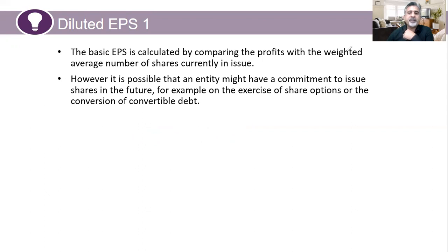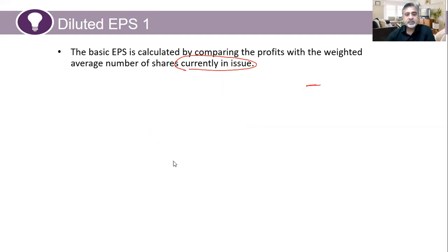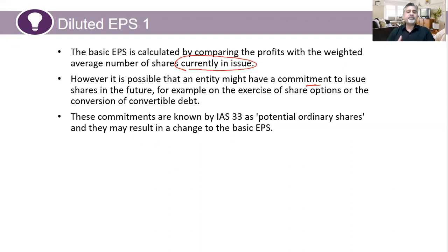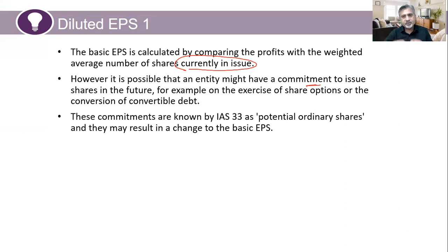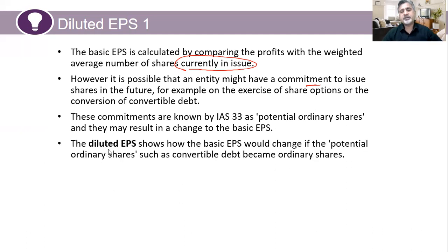Basic EPS is calculated by comparing profits with the weighted average number of shares currently in issue. However, it is possible that an entity might have a commitment to issue shares in the future — for example, share options or the conversion of convertible debt. These are known by IAS 33 as potential ordinary shares, and they may result in a change to the basic EPS because the number of shares will increase. Those shares which are to be issued in the future are added today, as if they were issued on the current date. That is called diluted EPS.